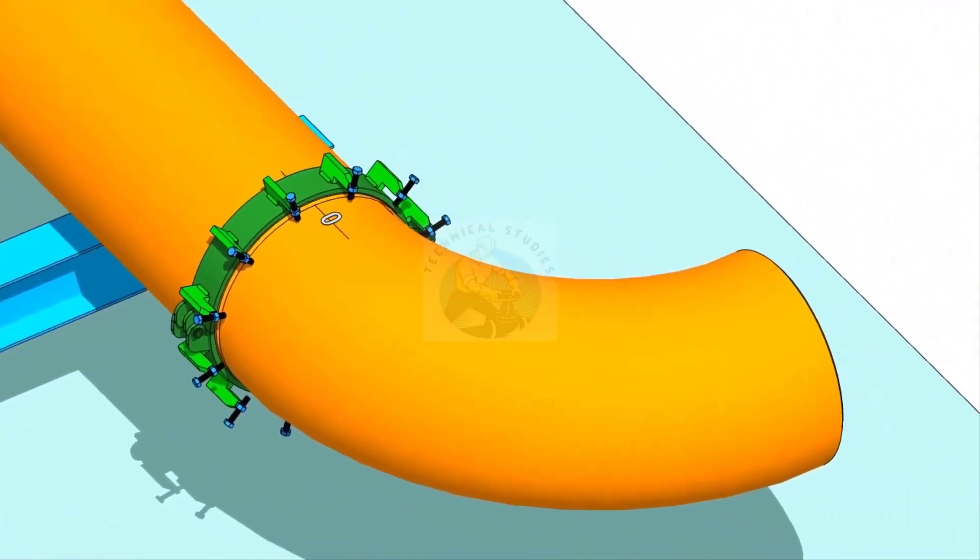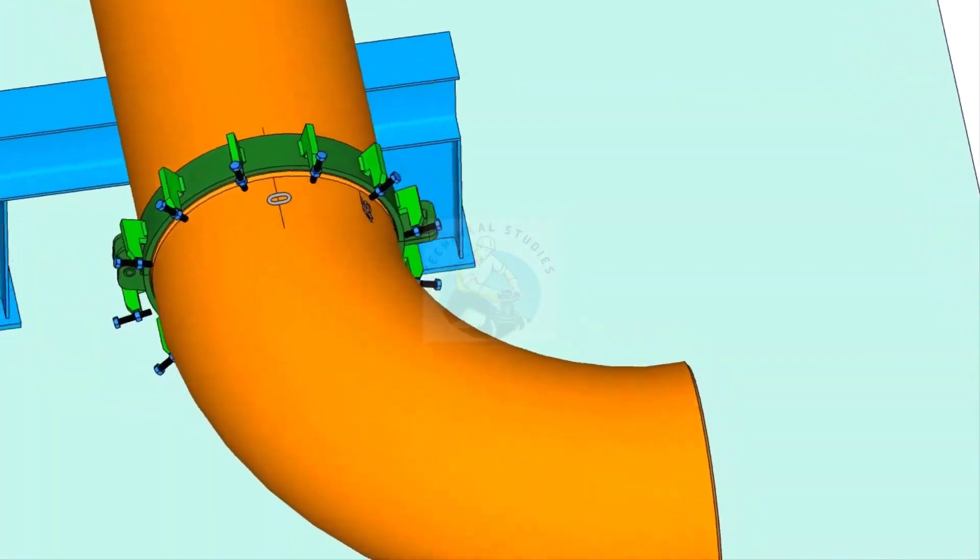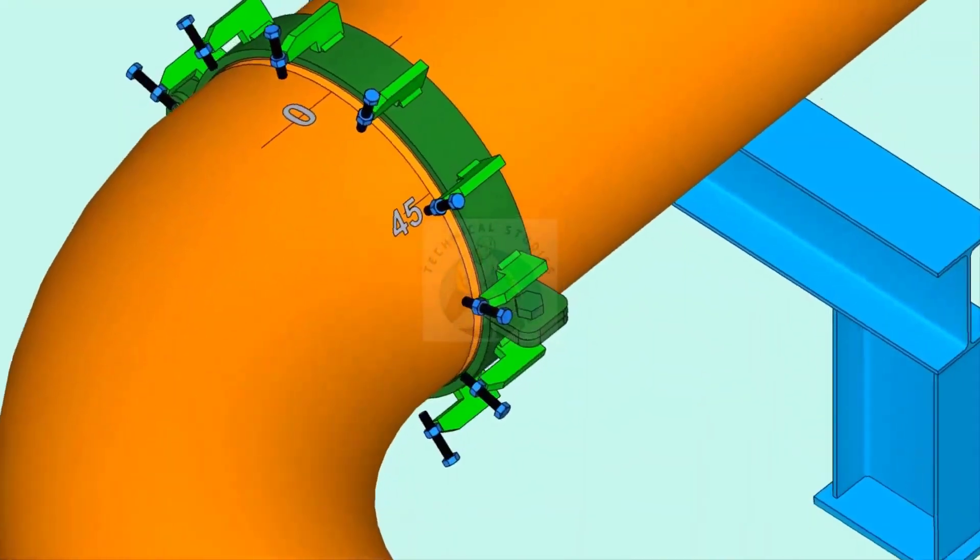Put the elbow on the pipe clamp. Make sure the marked end is near to the pipe. Arrange proper supports below the elbow.